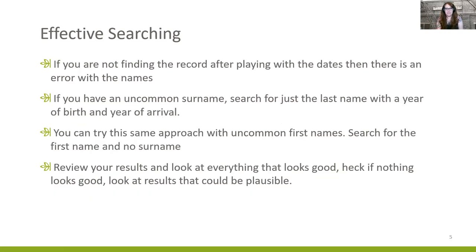If you can't find the record after playing with dates, it's likely something is wrong with the spelling of the name. For uncommon surnames, search just that surname with year of birth and year of arrival, leaving the first name out entirely. Take the same approach with uncommon first names. Review all results — look at anything that looks good, and if nothing does, look at things that could be plausible. Always look at the original record, not just the transcription results.